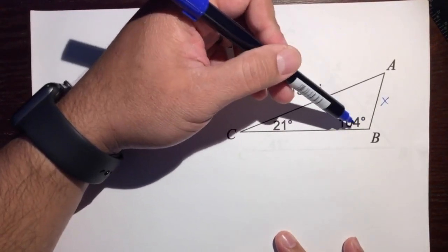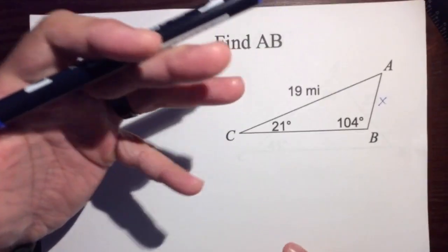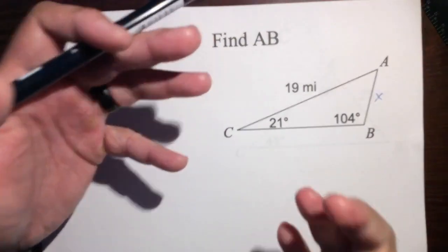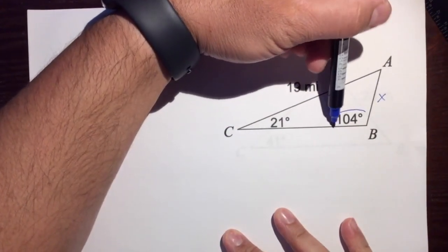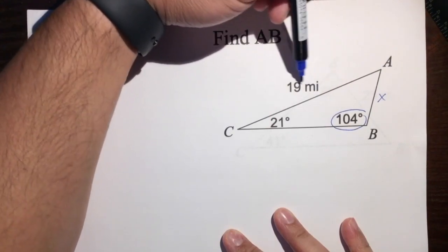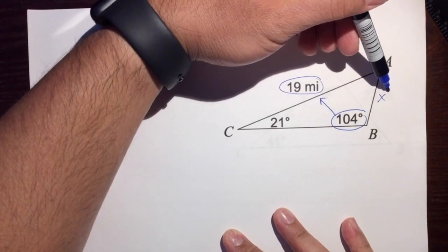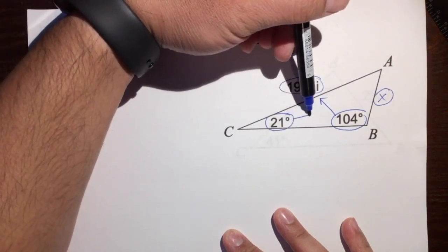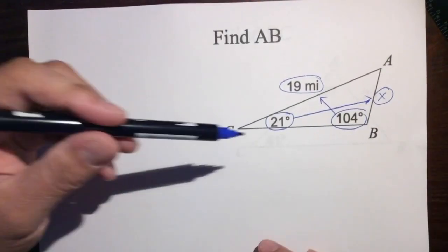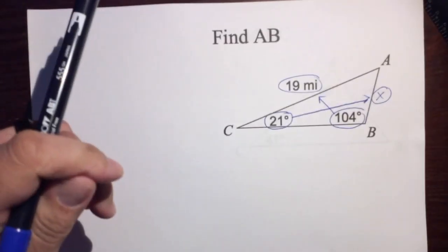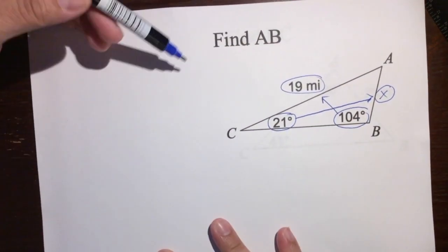It's not a right triangle — it's actually an obtuse triangle. So we can't use the Pythagorean theorem, we can't use 45-45-90 or 30-60-90 triangle identities, and we can't use sine, cosine, and tangent, because all that stuff only works for right triangles. But let's look a little closer: we do have this 104 degrees and the side opposite to it, which is 19 miles. We have an angle and its opposite side, and we're trying to find this side, which has 21 degrees opposite to it — so we have angle and opposite side, angle and opposite side.